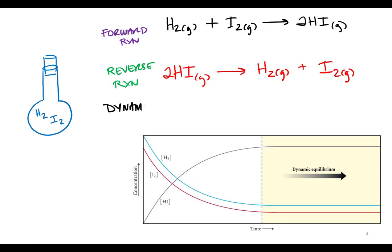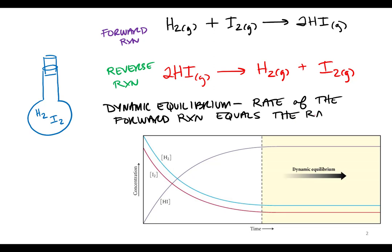So dynamic equilibrium is when the rate of the forward reaction equals the rate of the reverse. The equal in equilibrium part is for the rates. That's what's equal, not the concentrations. We'll worry about equilibrium concentrations quite a bit, but they are not what's equal. It's always the rates.